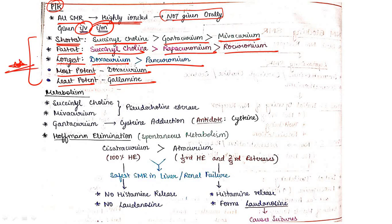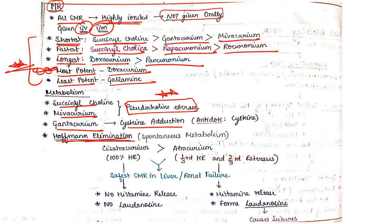Most potent SMR is doxacurium; least potent is gallamine. Regarding metabolism: succinylcholine and mivacurium are metabolized by pseudocholinesterase. Gentacurium is metabolized by cysteine adduction. Hofmann elimination is shown by cisatracurium and atracurium — this is spontaneous metabolism with no involvement of any organ or enzyme. Therefore, drugs undergoing Hofmann elimination are the safest SMR in liver and renal failure.